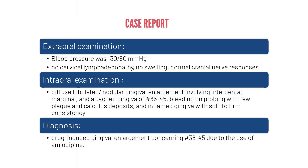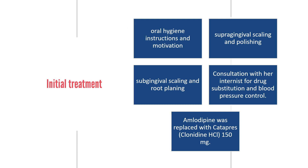The diagnosis was drug-induced gingival enlargement concerning teeth 36 to 45 due to the use of amlodipine. Initially, oral hygiene instructions and motivation, supragingival scaling and polishing, followed by subgingival scaling and root planing were performed. The patient was consulted back with her internist for drug substitution and blood pressure control, and amlodipine was replaced with catapres (clonidine) 150 micrograms.